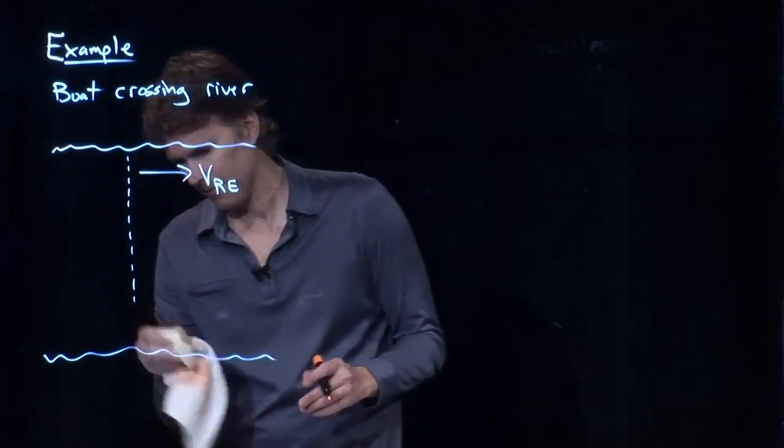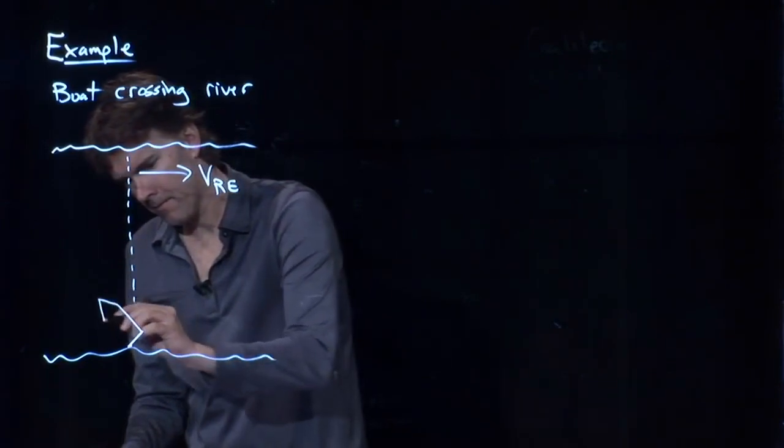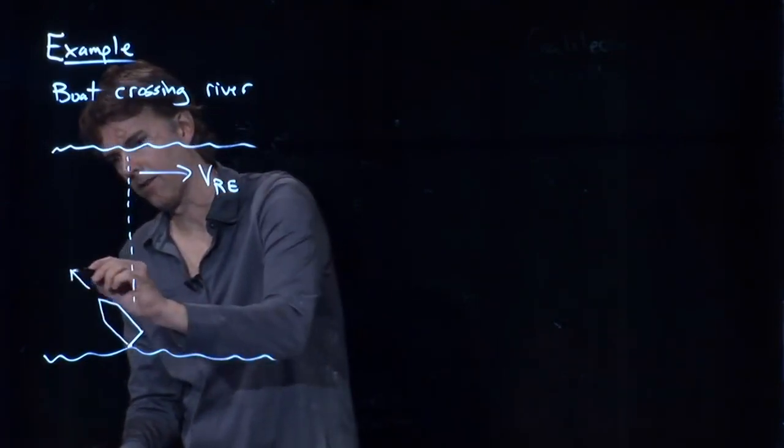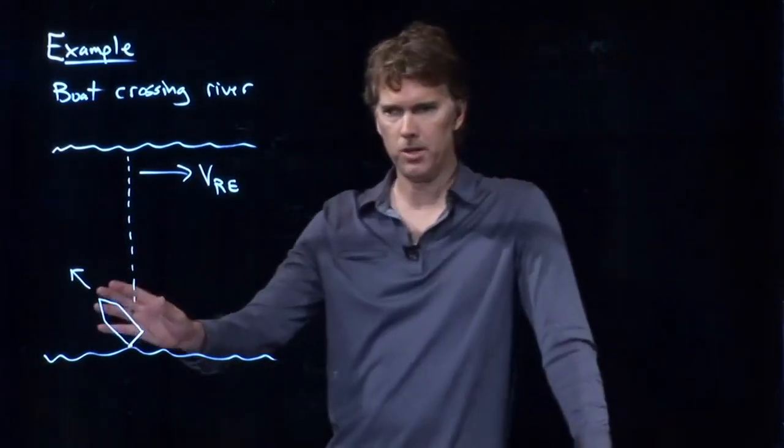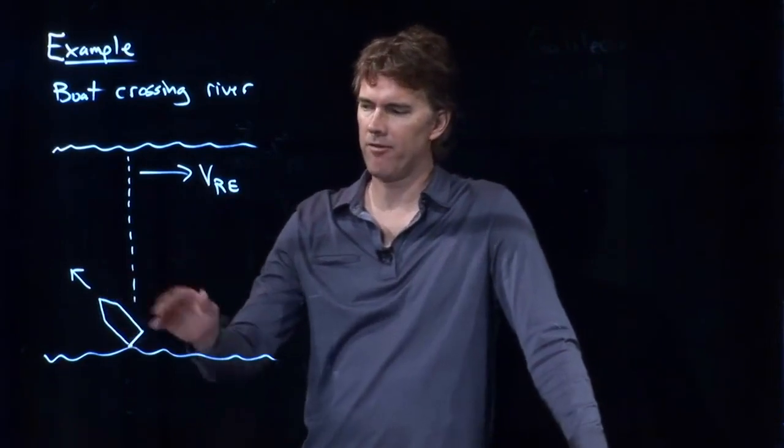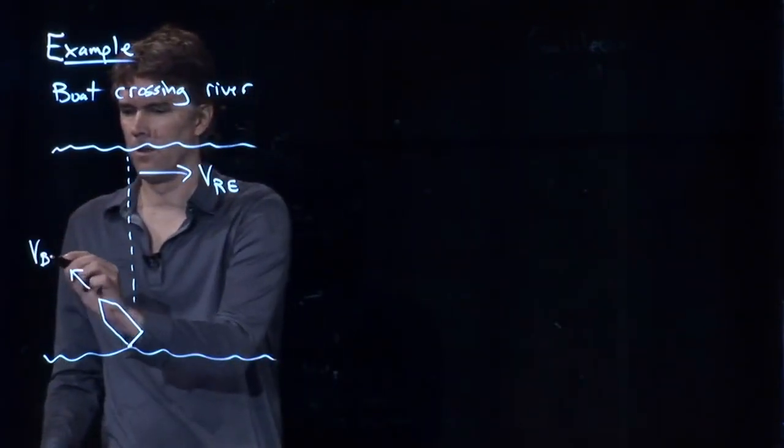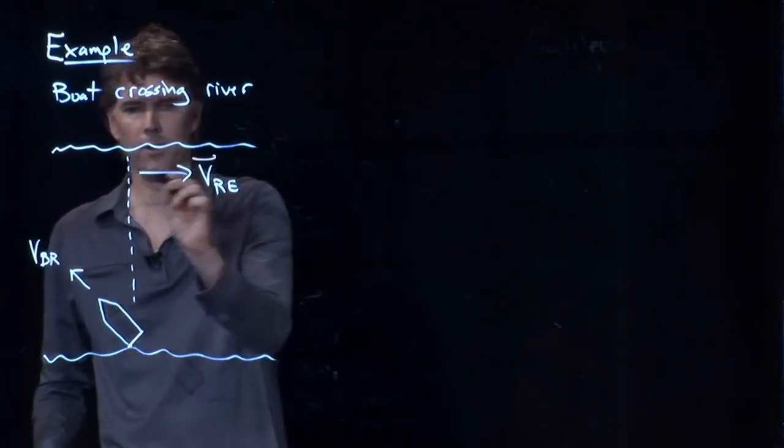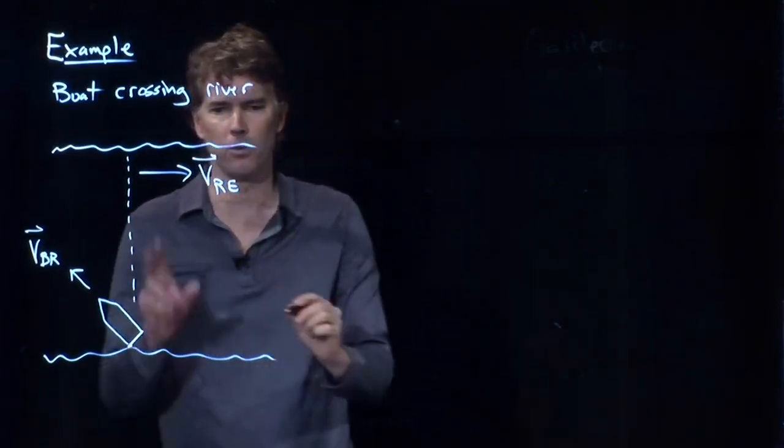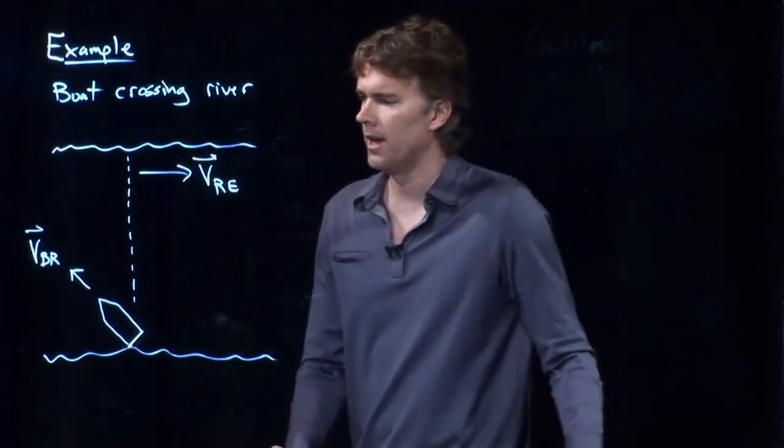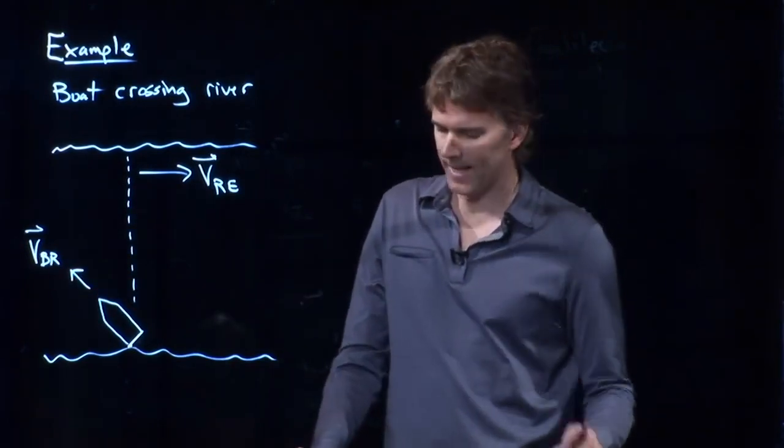So we can't point our boat in that direction. We, in fact, have to point our boat upstream in this direction. And we need to figure out what direction I need to point the boat, and how fast do I have to move the boat in order to get straight across the river. So here's our two relative velocities. We have the velocity of the river relative to the Earth, and the velocity of the boat relative to the river. And let's give you some numbers.